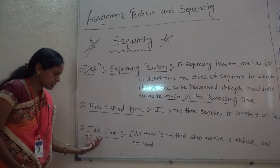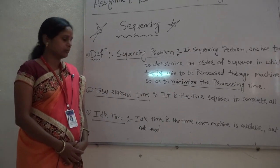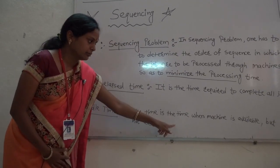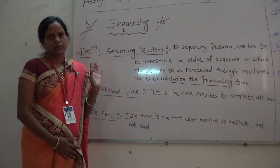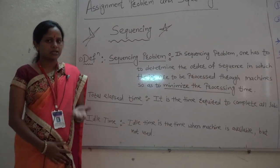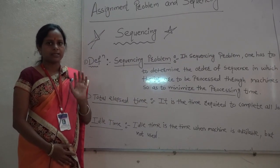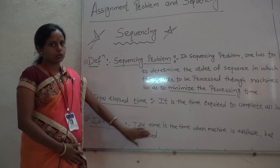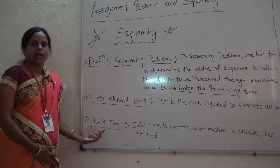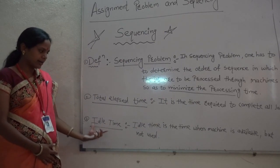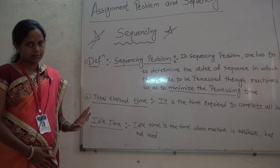The last point in sequencing is idle time. What is idle time? Idle time is the time when the machine is available but not used. That means the machine is available, but no jobs are assigned to it, so no work is happening on the machine. That unused time period is called idle time.